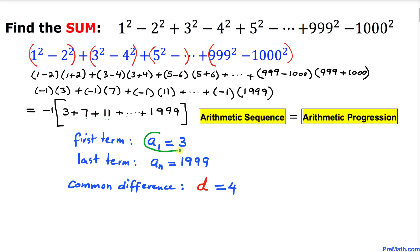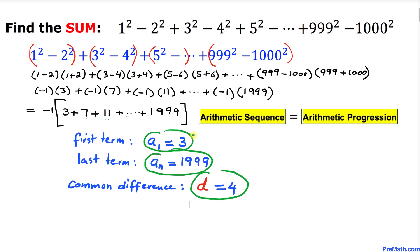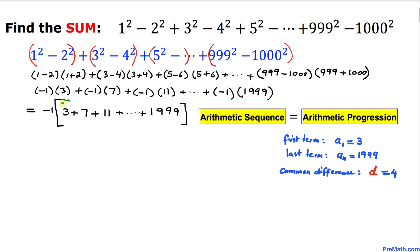Our first term is a₁ = 3, our last term is aₙ = 1999, and our common difference is d = 4. Now we need to find the sum of all these terms, but first we need to figure out how many terms there are.